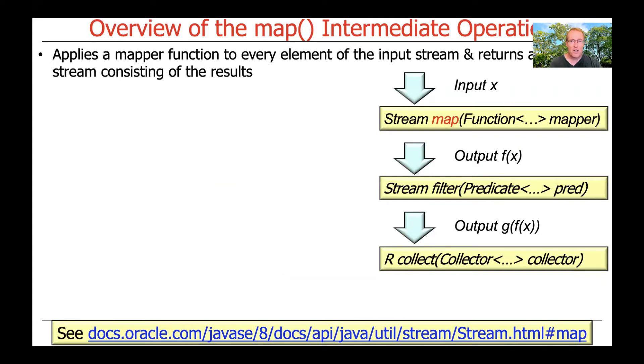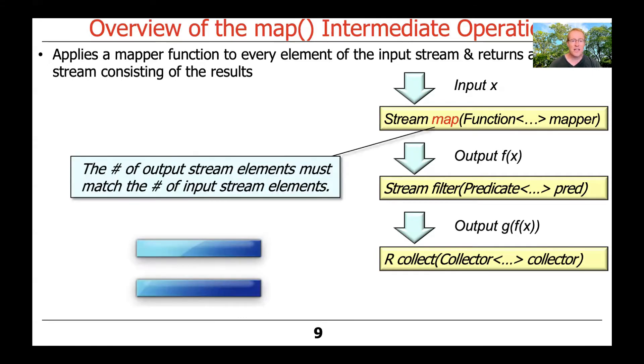The map function or the map intermediate operation applies a mapper function, which is actually a type function, the function functional interface, and it applies this mapper function to every element of the input stream, and it returns an output stream consisting of the results of doing the mapping. The number of output stream elements must match the number of input stream elements.